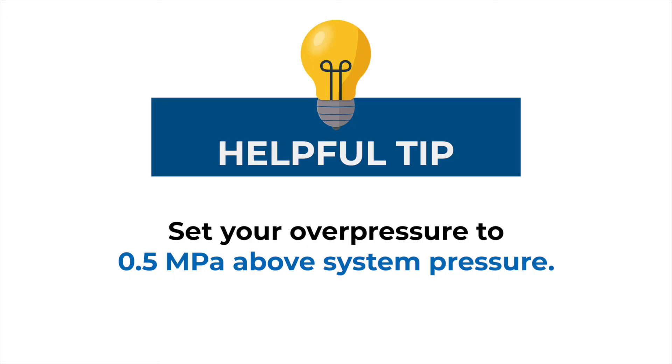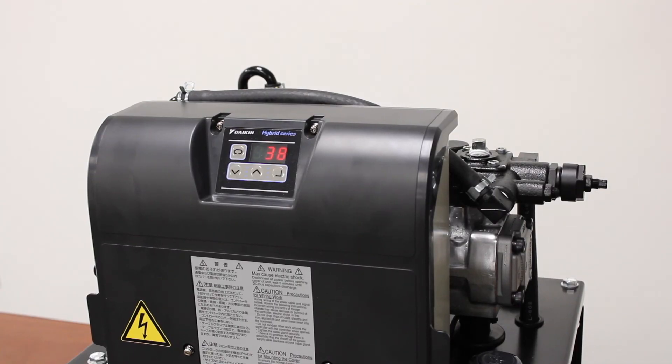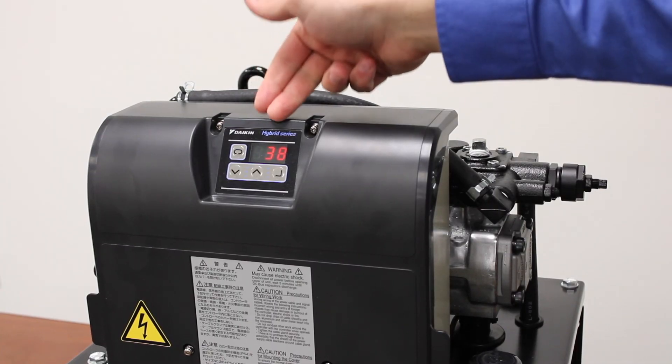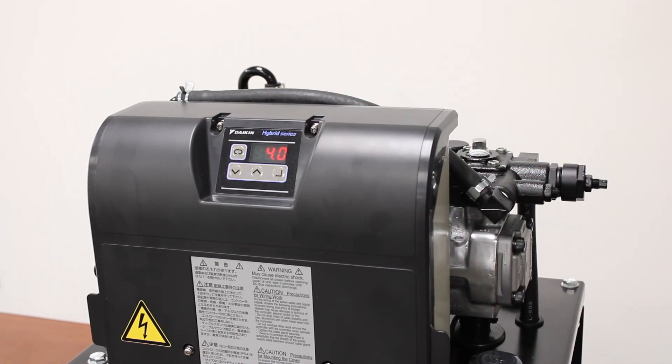Then turn clockwise an additional three quarters of a turn. This sets the over pressure to 0.5 MPa above system pressure. Our over pressure relief is now set and you can tighten down your jam nut. Once we've got everything tight and set, we should be displaying 38. You can go ahead and hit your menu key and it will take you back to display your pressure setting.